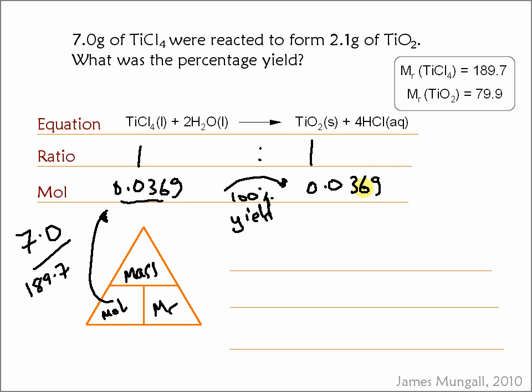Now, we want to convert this number of moles into a mass, and to do that we can take that mass, we know that that's mole times Mr, multiply by the Mr of the TiO2, 79.9, which gives 2.95 grams. So that there is the mass of the TiO2 you would form if it was 100% yield.